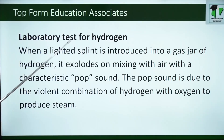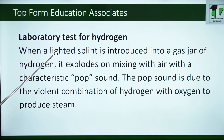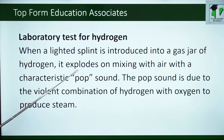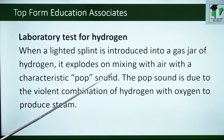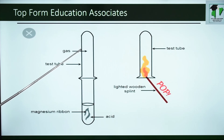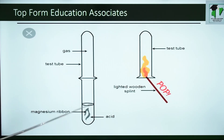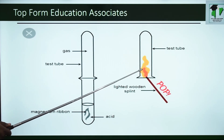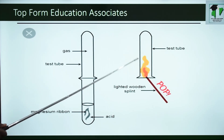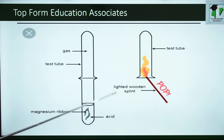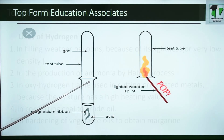Laboratory test for hydrogen. When a lighted splint is introduced into a gas jar of hydrogen, it explodes on mixing with air with a characteristic pop sound. The pop sound is due to the violent combination of hydrogen with oxygen to produce steam. This is magnesium ribbon reacting with acid to generate hydrogen gas, and once you put a lighted splint into that test tube, you will hear a pop sound showing that the gas is hydrogen.